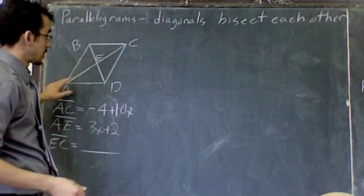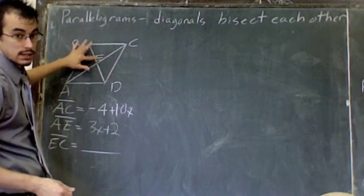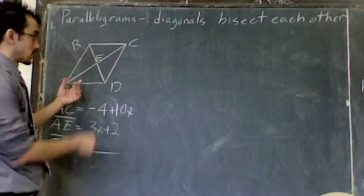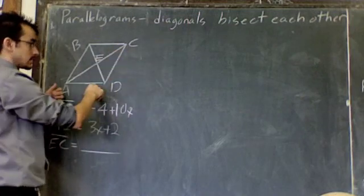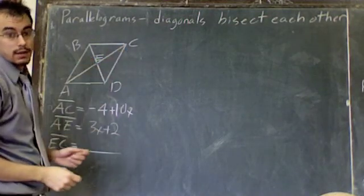Okay? So this line divides this line into two congruent pieces, this is the same length as this, and vice versa. First, this line cut this line AC into two pieces, where AE and EC are the same length.